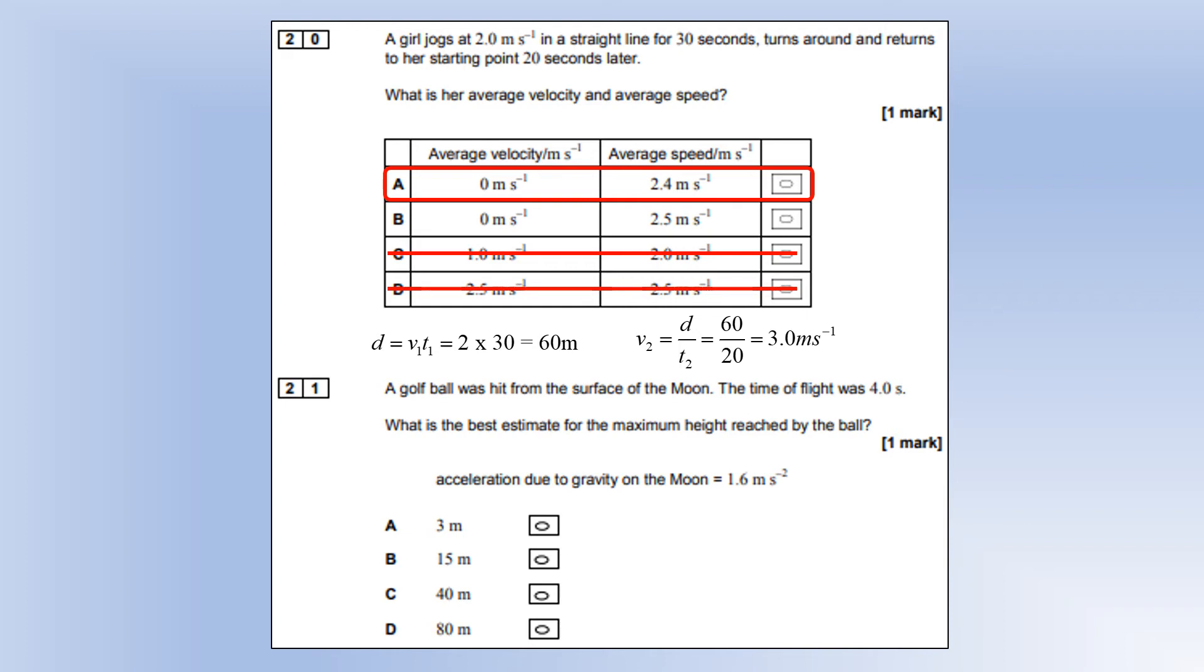A golf ball was hit from the surface of the moon. Flight time is four seconds. What's the best estimate for the maximum height reached with acceleration of 1.6 meters per second squared? At maximum height, the time would have taken two seconds. The time to maximum height is half the whole flight time if you're hit from the surface. Then using the super equation, at maximum height, the vertical velocity is zero. We can plug the values in and get 3.2, which is around option A.